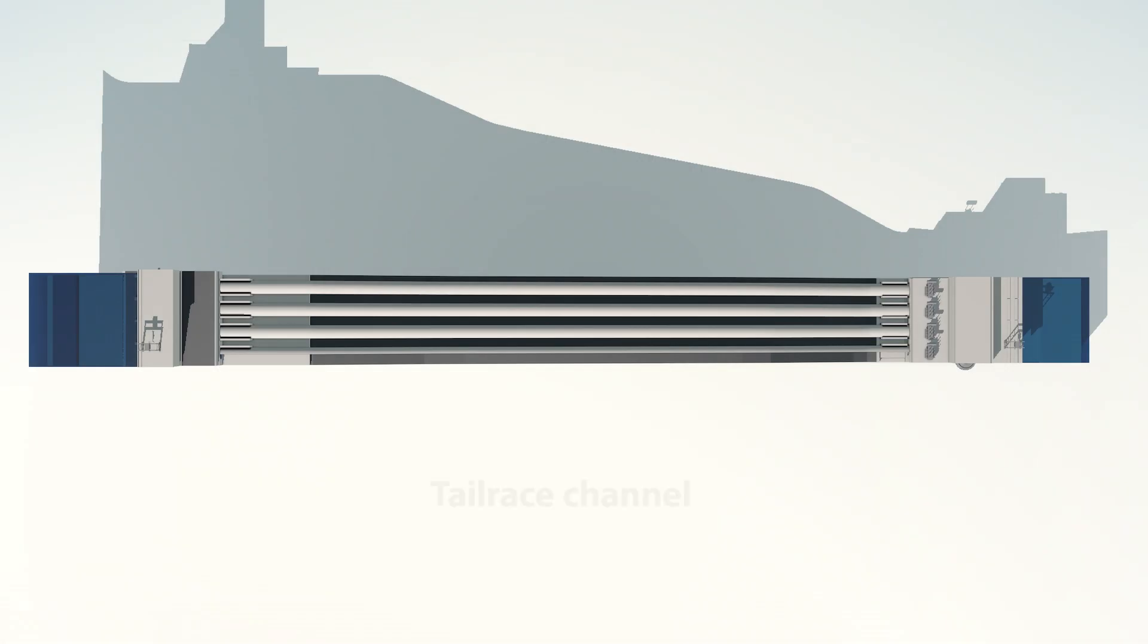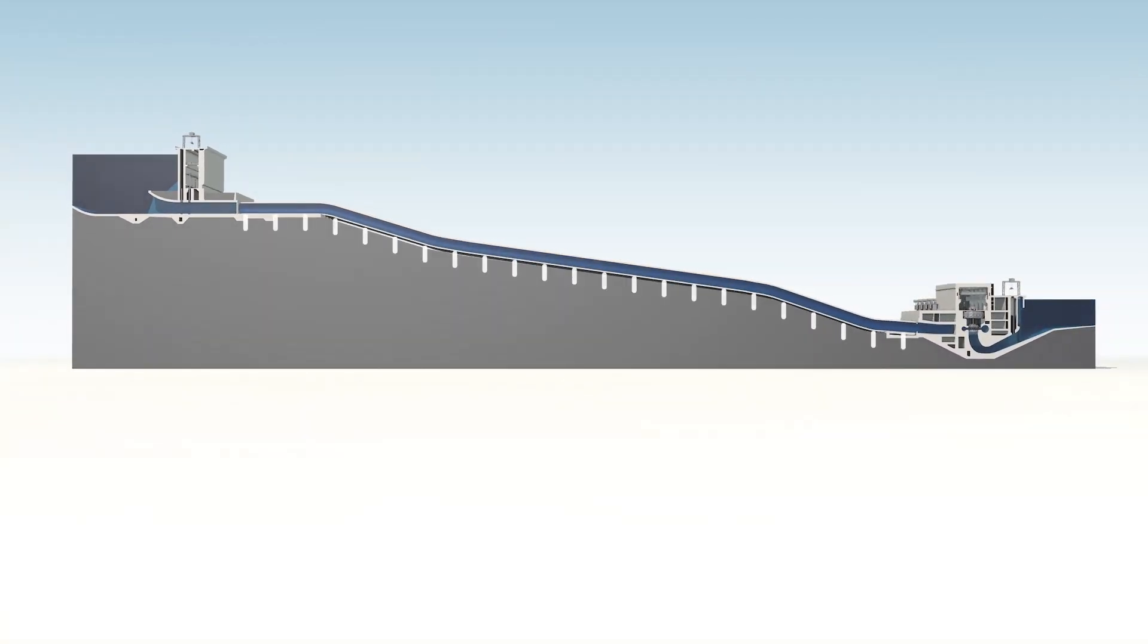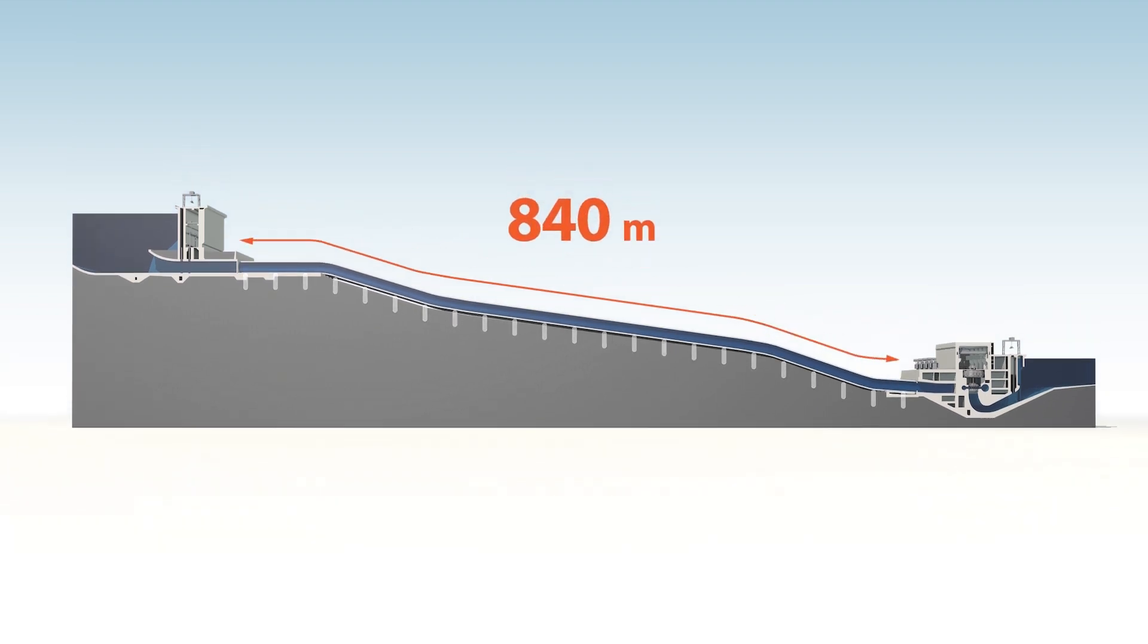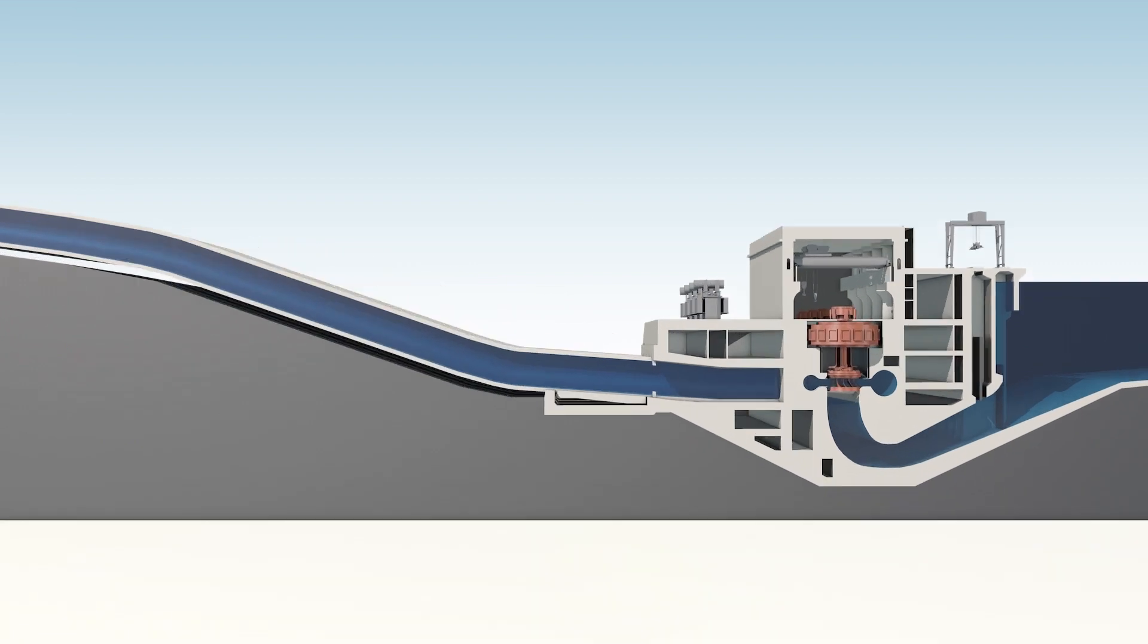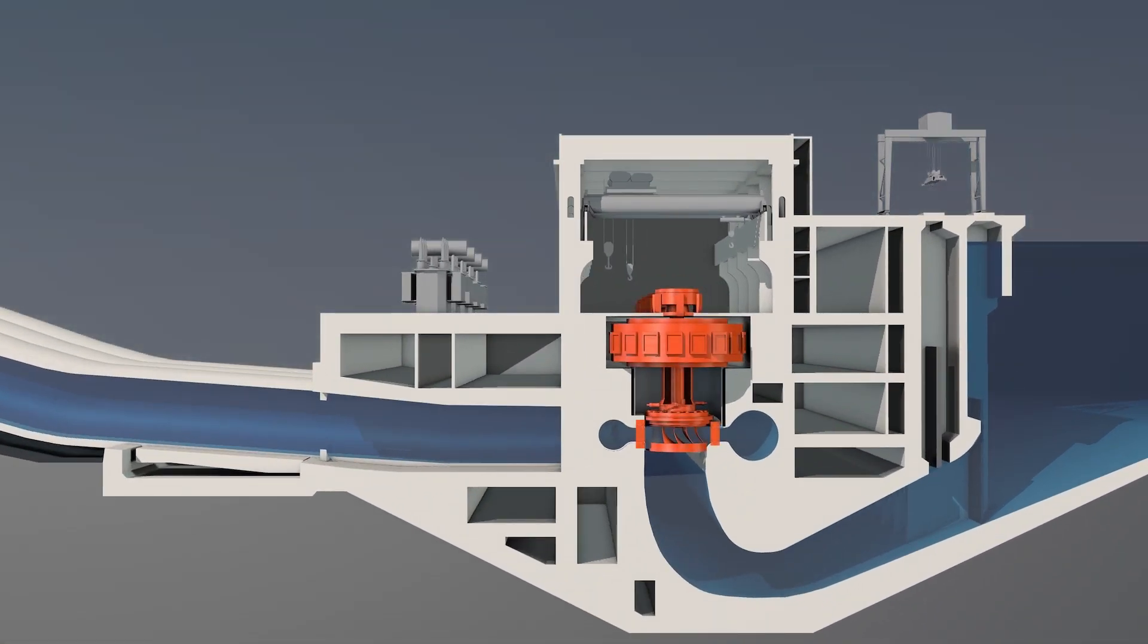A tailrace channel beside the facility connects the powerhouse to the lower reservoir. Water flows in both directions through the four concrete-encased steel penstock pipes, which are laid on board piling and each has a length of 840 meters. These penstocks are connected with the equipment in the powerhouse and in the intake.